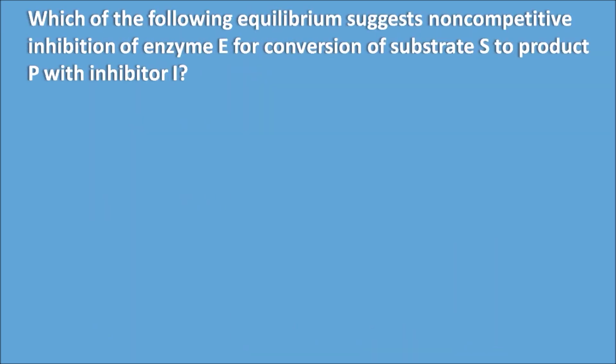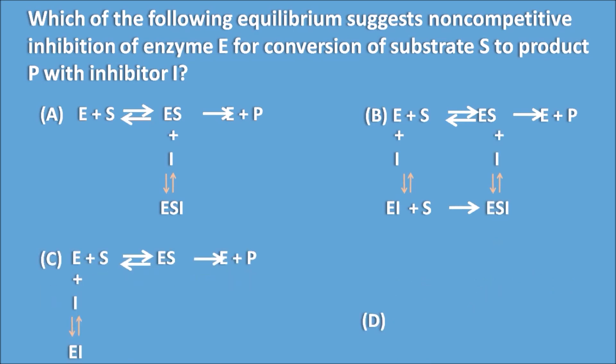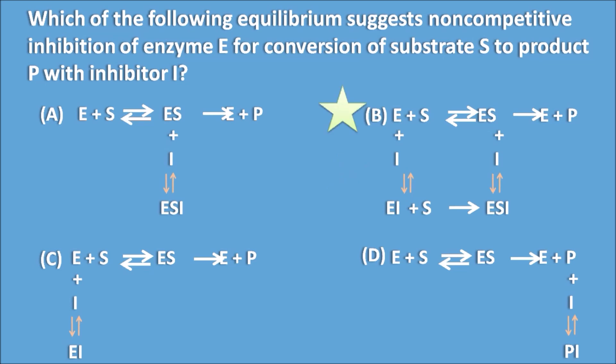Which equilibrium suggests non-competitive inhibition of enzyme E for conversion of substrate S to product P with inhibitor I? Options show: A — inhibitor acting on the enzyme-substrate complex; B — acting on both enzyme and enzyme-substrate complex; C — acting only on the enzyme; D — acting on the product. Non-competitive inhibition is a mechanism where the inhibitor inhibits both the enzyme and the enzyme-substrate complex. So option B is the right answer.